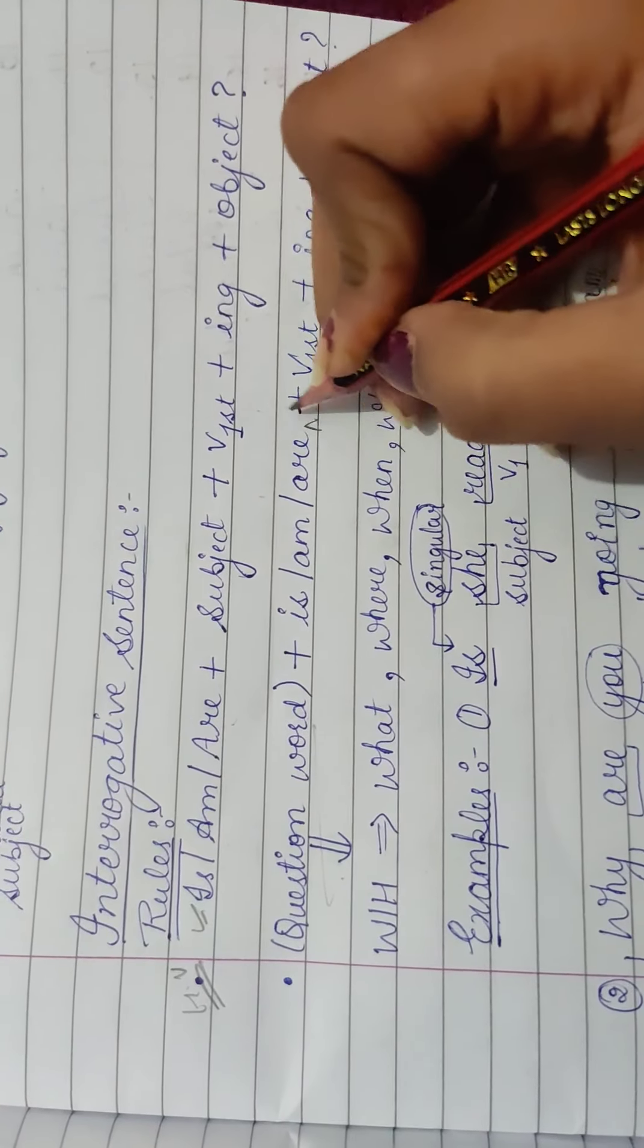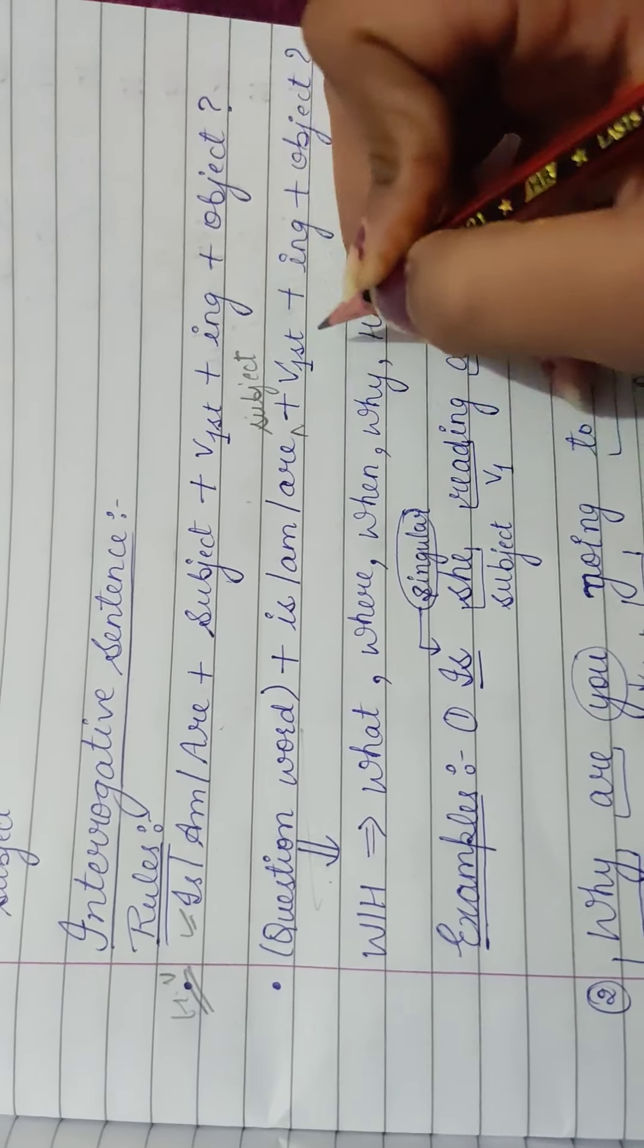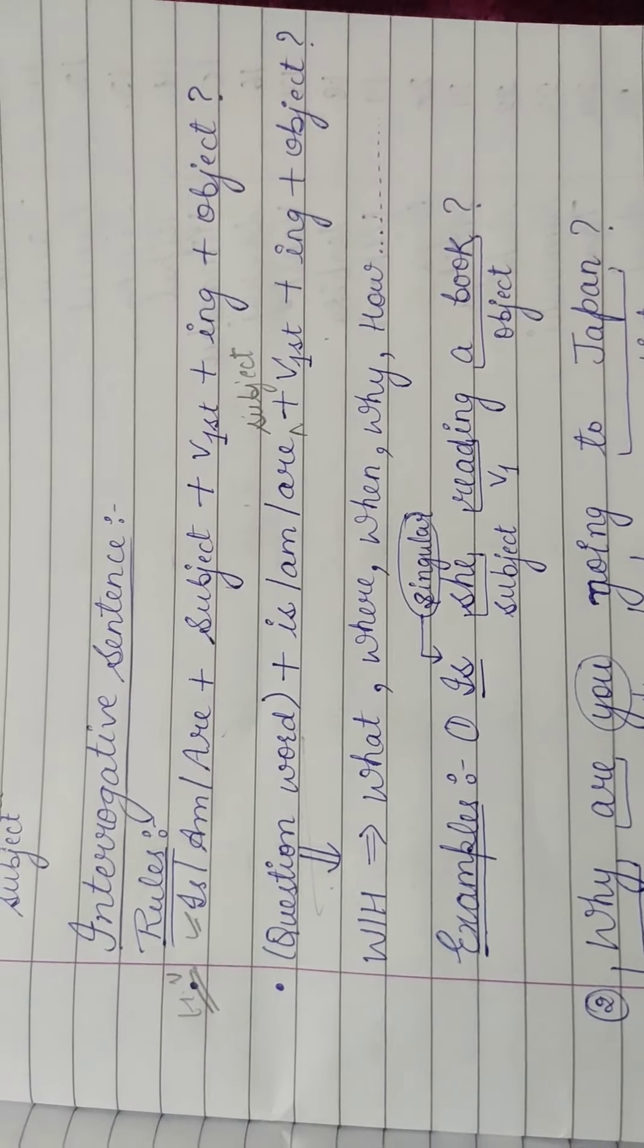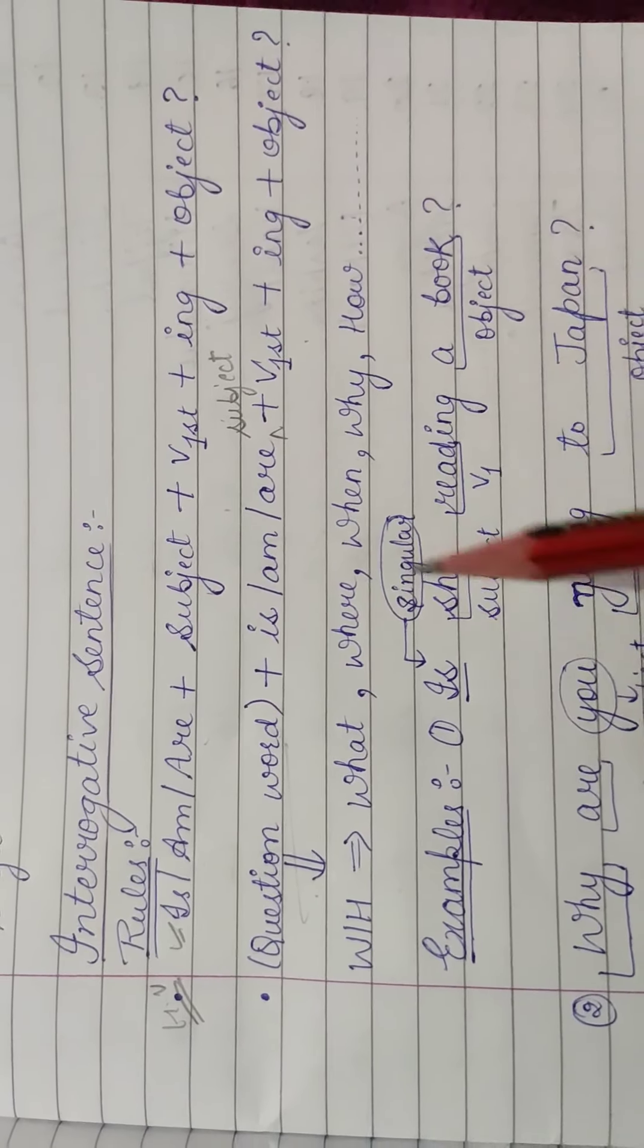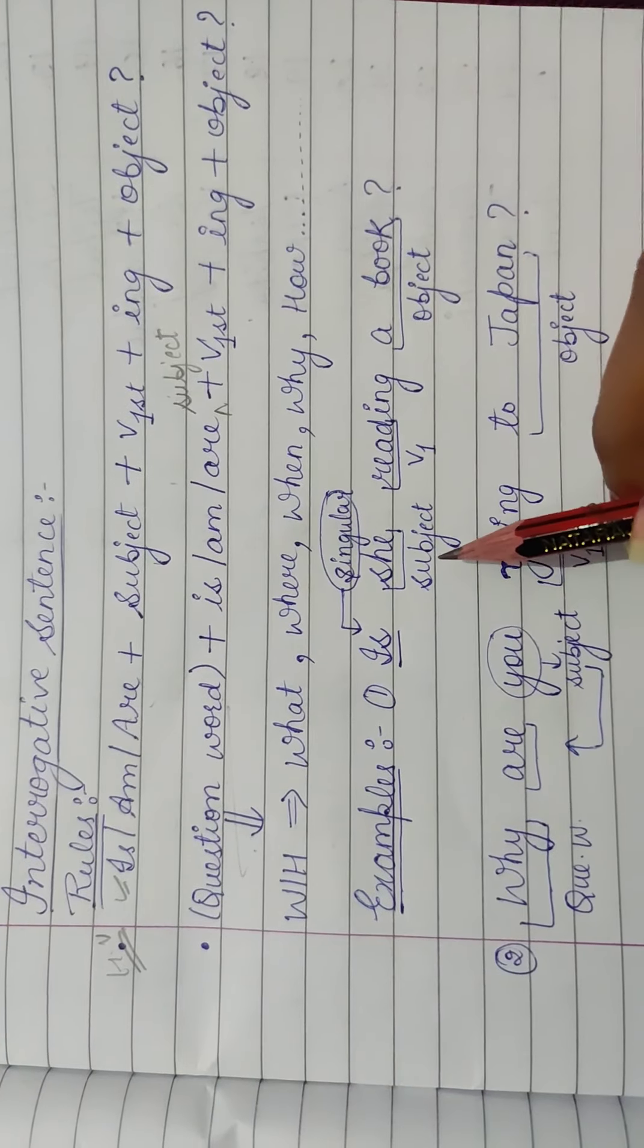Is ke meim, aapka subject likhna bhool gai thi. So, aapka sabse subject aayega, then aapka first form, then ing, then object. Ye saari chiz chalta hai. So, is ke example hi bhi, dekh lete hai. Pahle to ye wala dekh rahe hai, jis me helping verb se hum question puchta hai.